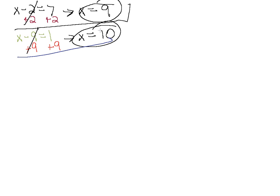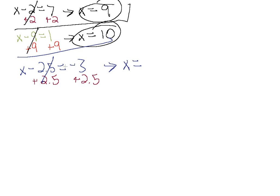Let's say we have x minus 2.5 equals minus 3. We have a decimal but it works the same way. To get rid of this minus 2.5 and have x by itself, we simply add 2.5. Whatever we do on one side we have to do on the other side to keep the balance in the equation, so we add 2.5 on the right side as well. This cancels out leaving just x on the left side. Over here we have minus 3 plus 2.5, which gives us minus 0.5. So x equals minus 0.5.